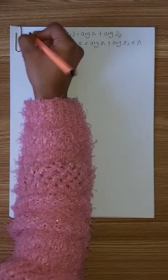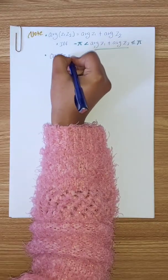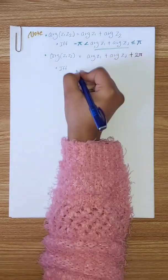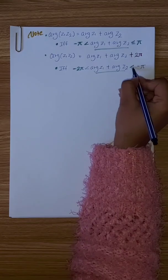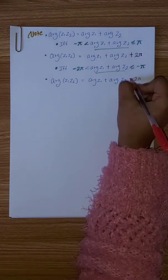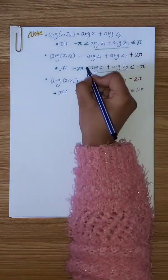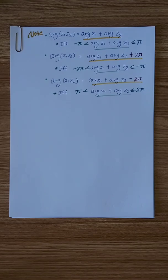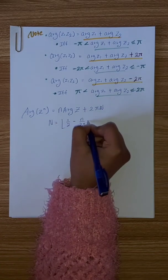For the argument of z1 times z2, the argument r of z1 times z2 equals r of z1 plus r of z2. For the principal argument: if r of z1 plus r of z2 is greater than pi, then we subtract 2pi. If r of z1 plus r of z2 is less than negative pi, then we add 2pi. The power of z: if r of z equals n, then the argument equals n times r of z plus 2pi times n.